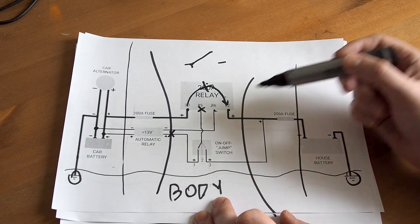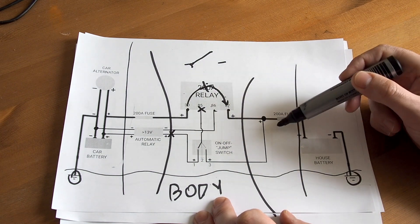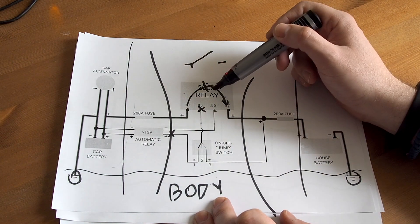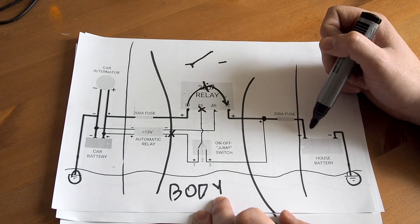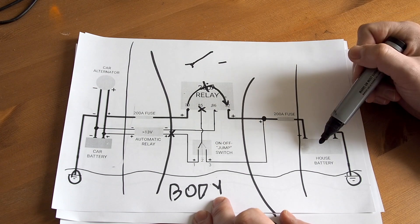And jump mode, which connects the positive from the house battery directly to the relay. So the relay will stay closed all the time. And with this feature I could start my engine from my house battery.